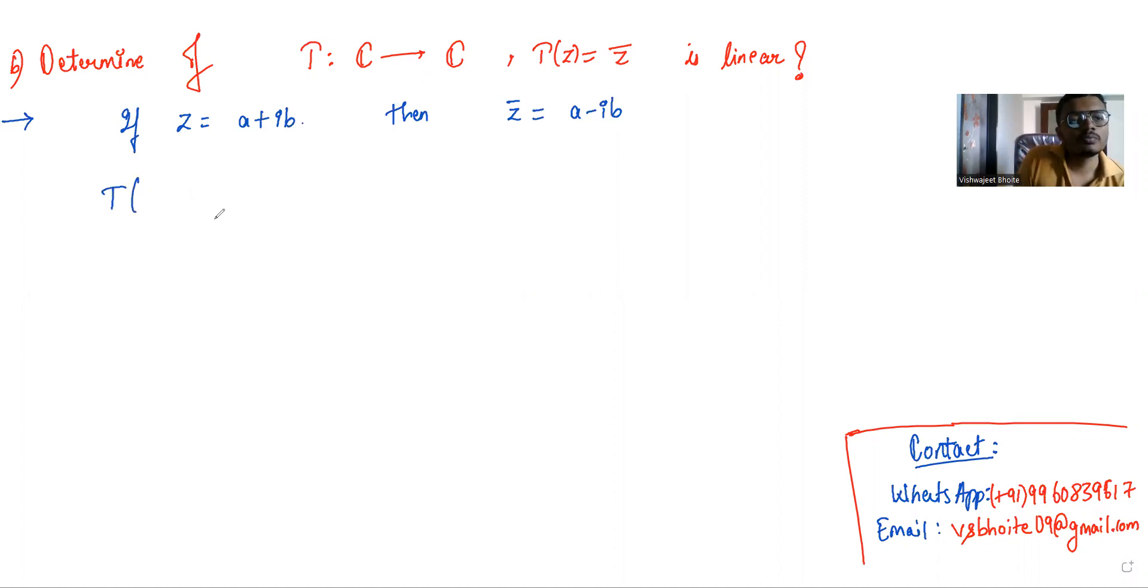T of z1 plus z2 equals... Let z1 be a1 plus ib1 and z2 be a2 plus ib2.